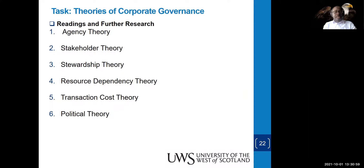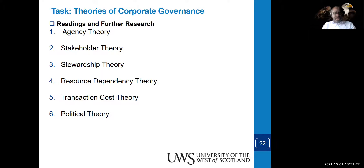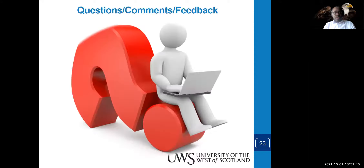Also review internal controls — there are five headings from the COSO framework. Regarding theories: agency theory — the agent-principal scenario. Stakeholder theory — we have to work to satisfy our stakeholders. Stewardship theory has some link with agency. Also look at resource dependency theory, transaction cost theory, and political theory — you don't need to go too deep into political theory.